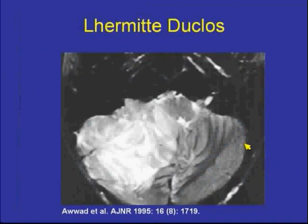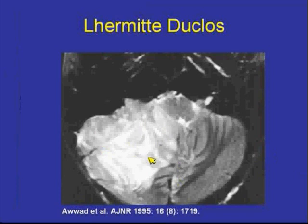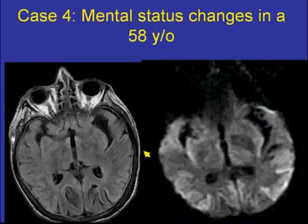The other foil was Lermitte-Duclos, which is a lesion usually of a cerebellar hemisphere, considered a type of ganglioglioma. We now move to the next case, which is a patient who had mental status changes.